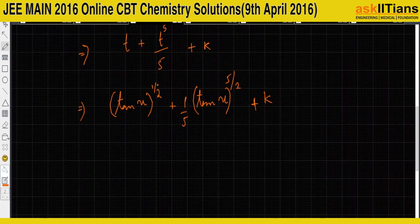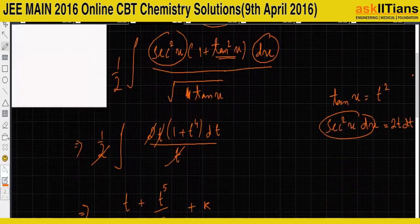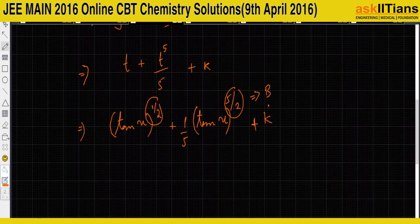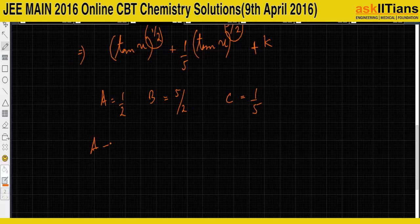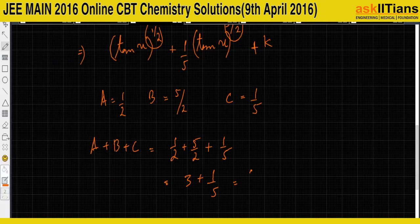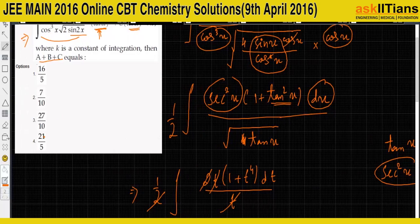Comparing with the given form, a = 1/2, b = 5/2, and c = 1/5. Therefore a + b + c = 1/2 + 5/2 + 1/5 = 3 + 1/5 = 16/5. The answer is 16/5 which is option 1. All you have to do is convert everything to tan(x) and the question just evaporates.